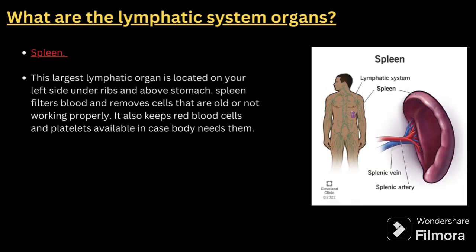Next comes the spleen. The spleen is the largest lymphatic organ, located on the left side under the ribs and above the stomach. It filters blood and removes cells that are old or not working properly. It also keeps red blood cells and platelets available in case the body needs them.